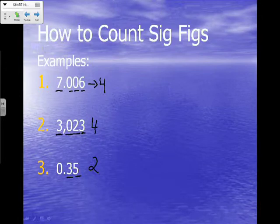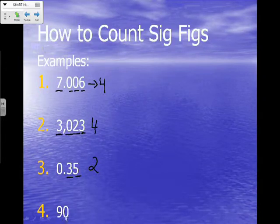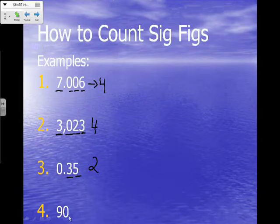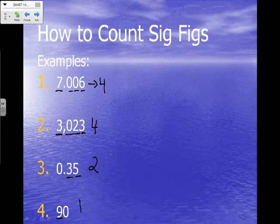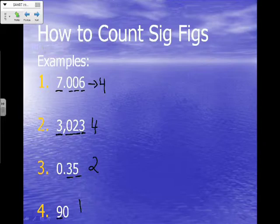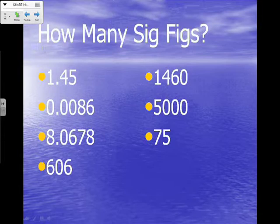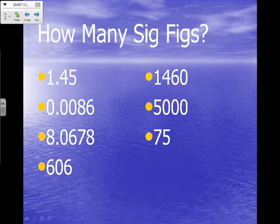Now let's look at number 4, which is 90. The decimal is absent — we don't see it anywhere. So we start on the Atlantic Ocean side. We start counting with the first non-zero number, so we skip the zero, count the 9, and this has one significant figure. Go ahead and do the practice problems already written in your notes — determine the number of significant figures. Pause the tape and resume once you're ready to check your answers.